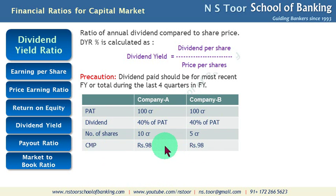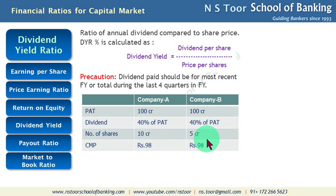Number of shares in Company B is 5 crore. Current market price of both companies is Rs. 98. Let us now calculate the ratio and try to find out the findings.